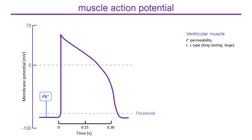The arrival of an action potential from the conducting Purkinje fibres causes depolarization which raises the membrane potential to the threshold for activating sodium channels, therefore increasing sodium permeability. These are fast-activating channels, so there is a rapid influx of sodium ions causing a rapid and large depolarization to form the upstroke of the action potential. The action potential reaches a peak when the membrane potential approaches the equilibrium potential for sodium ions and the sodium channels become inactivated, reducing sodium flux.